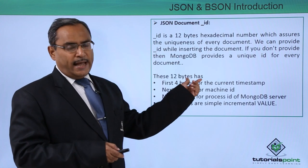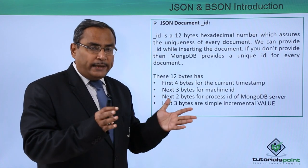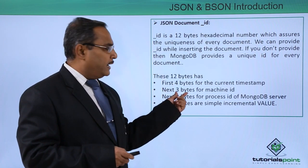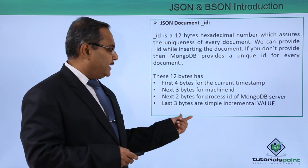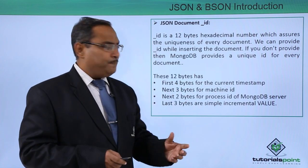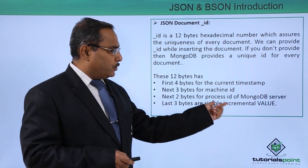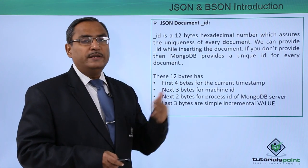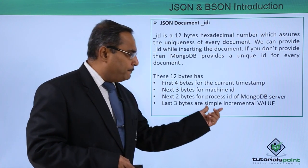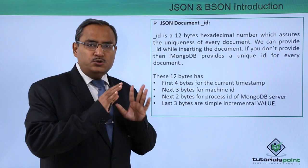This underscore ID has 12 bytes, divided as follows: 4 bytes plus 3 bytes equals 7 bytes, plus 2 bytes equals 9 bytes, plus 3 bytes equals 12 bytes. The first 4 bytes are for the current timestamp, the next 3 bytes for the machine ID, the next 2 bytes for the process ID of the MongoDB server, and the last 3 bytes are a simple incremental value. That is the format of this 12-byte underscore ID.